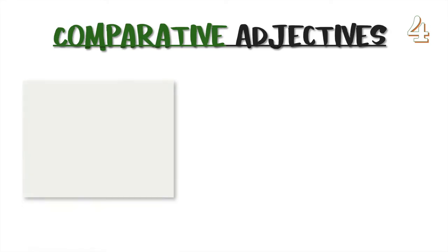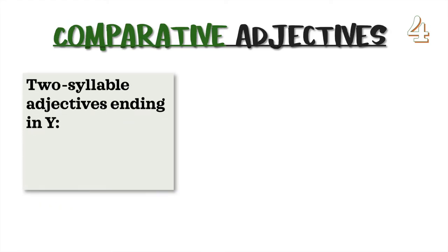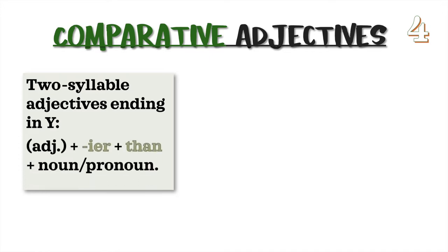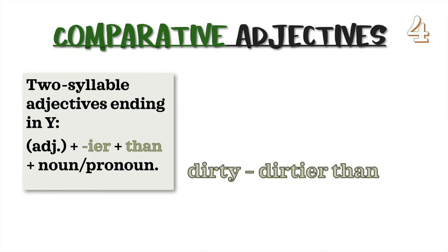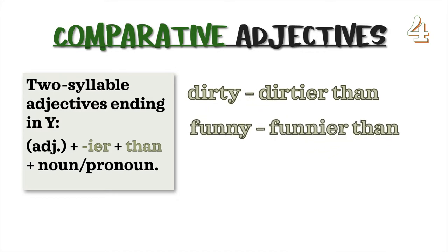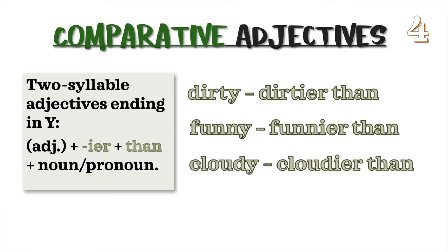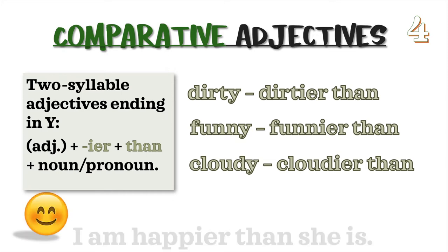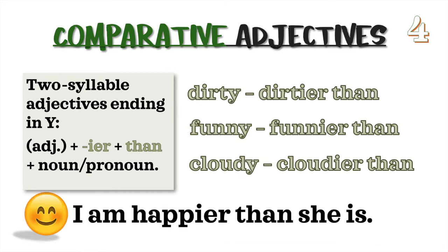Rule 4: Two syllable adjectives ending in y. The formula is adjective plus -ier plus than, plus noun or pronoun. Notice the y changes to i. For example: dirty → dirtier than; funny → funnier than; cloudy → cloudier than. Example sentence: I am happier than she is.